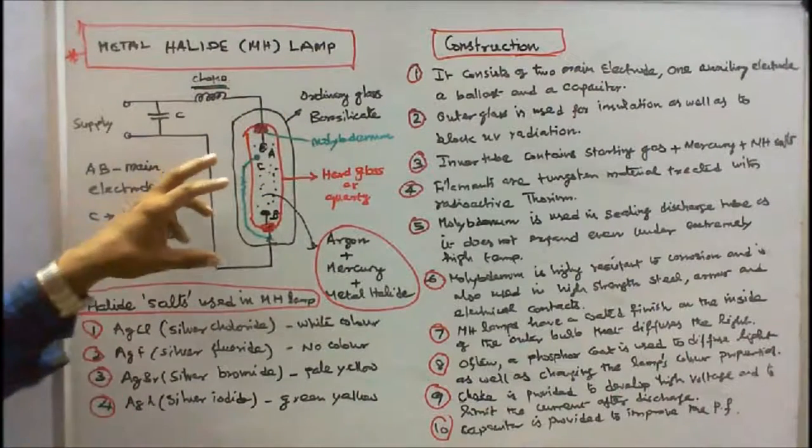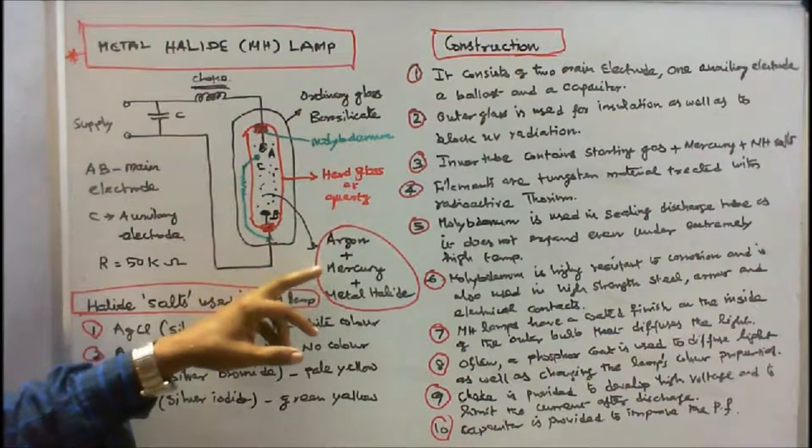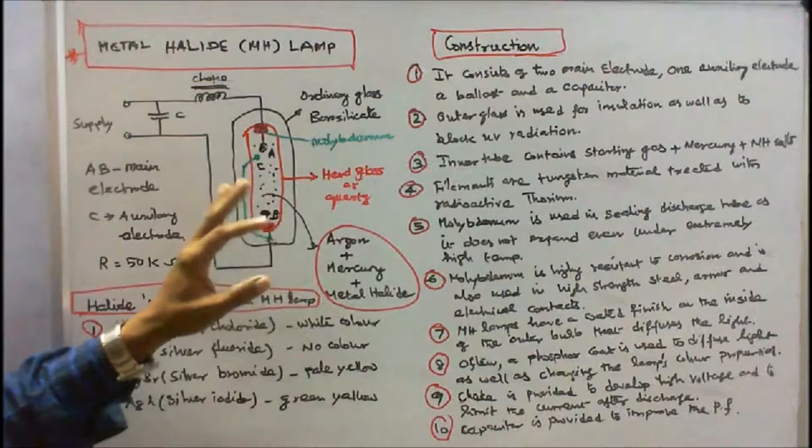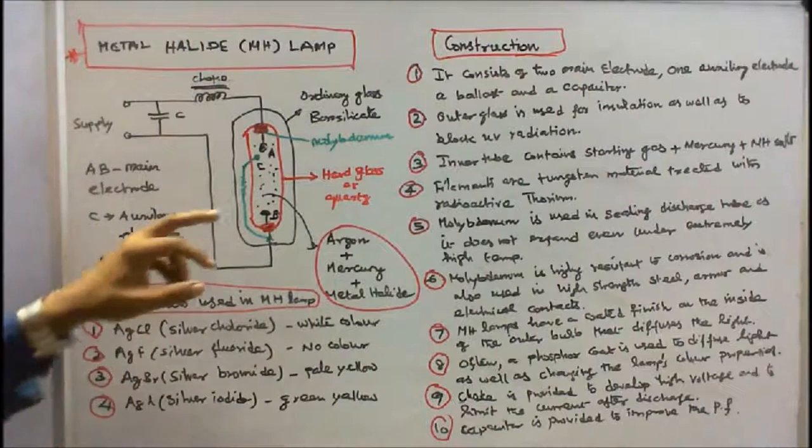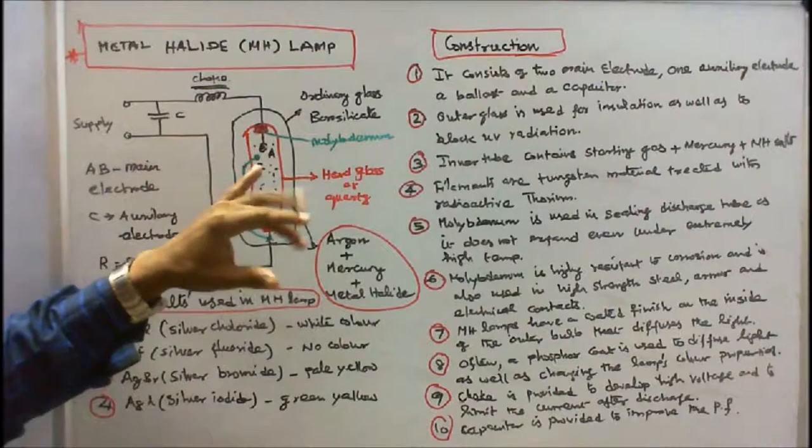Inner tube or discharge tube contains starting gas argon plus mercury plus metal halide salt. Filaments are tungsten material treated with radioactive thorium.